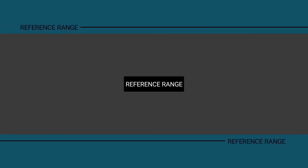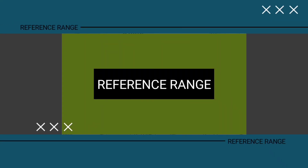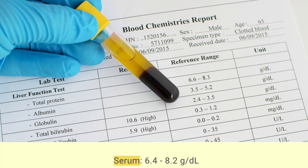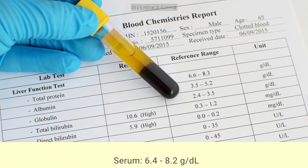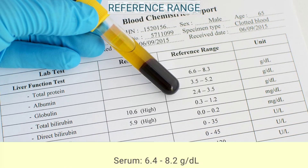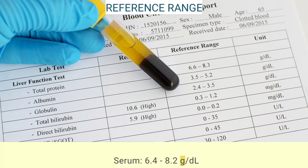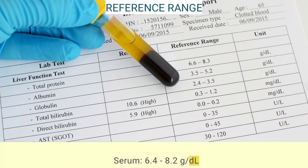The reference range for serum total protein is 6.4 to 8.2 grams per deciliter.